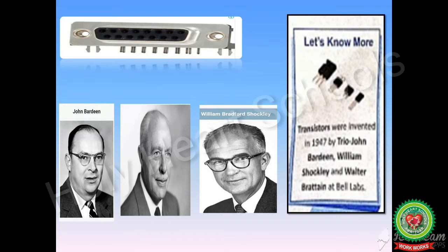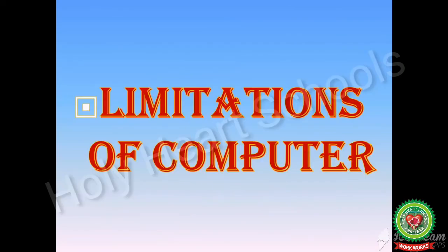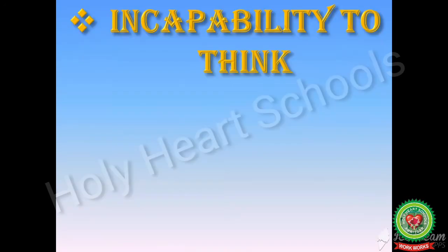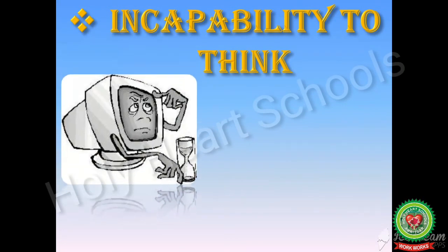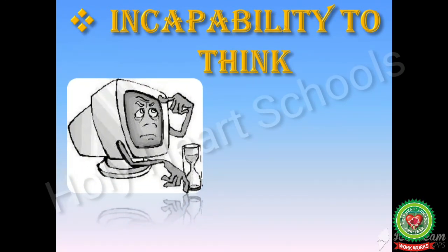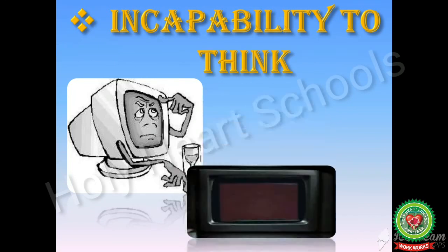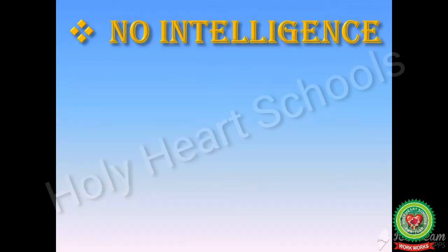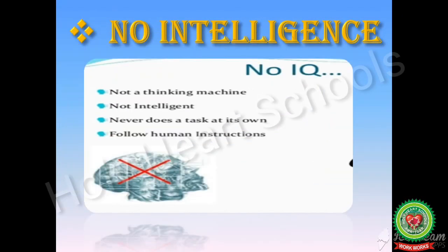Now we are going to discuss limitations of computer, given on page number 12. The first limitation is incapability to think — a computer cannot think or take decisions on its own, and in case of any error it cannot take any alternative action. The second limitation is no intelligence: unlike human beings, a computer has no IQ and needs instructions at every step.